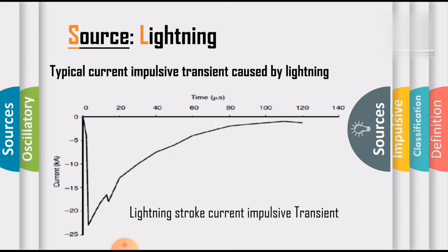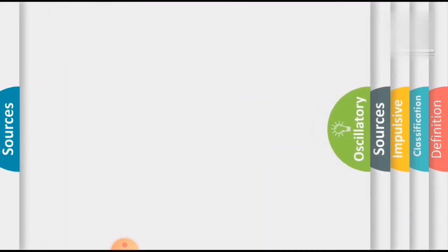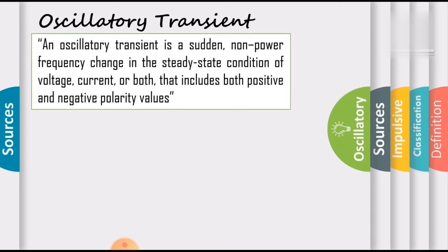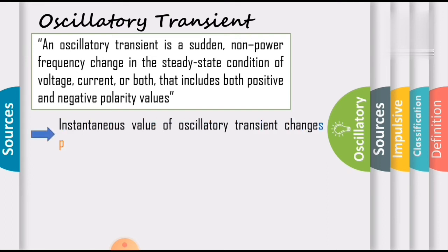From the observation of this waveform, we conclude that an impulsive transient is a sudden non-power frequency change in the steady state condition of voltage, current, or both, that is unidirectional in polarity — and by observing this wave plot, it is confirmed it is only the unidirectional one. The second type is oscillatory transients. An oscillatory transient is a sudden non-power frequency change in the steady state condition of voltage, current, or both, that includes both positive and negative polarity values. The instantaneous values of oscillatory transients change polarity rapidly.